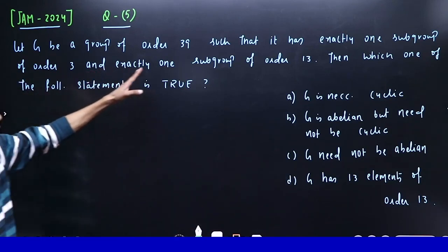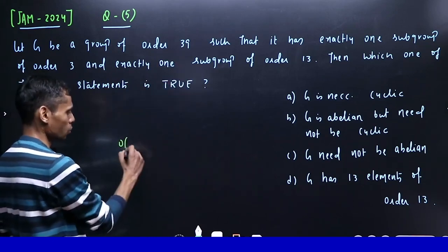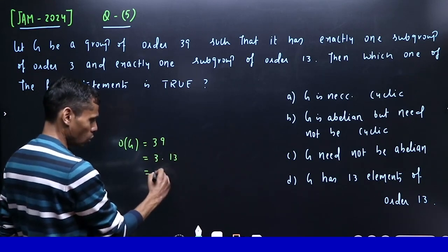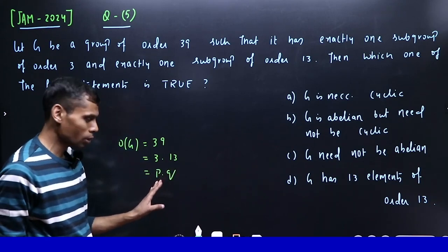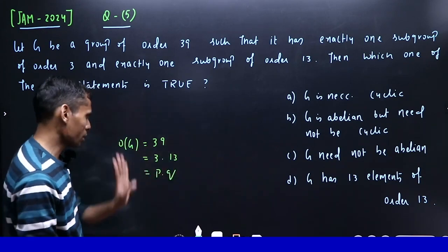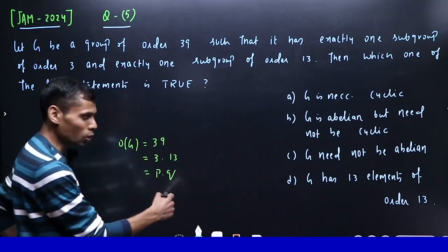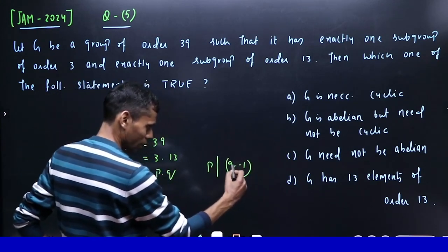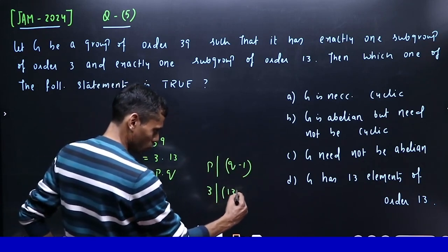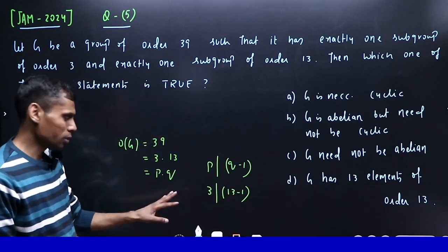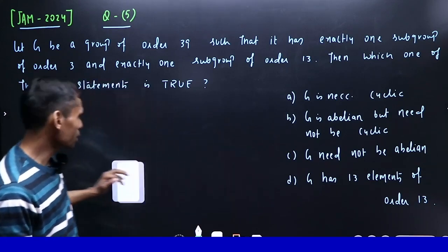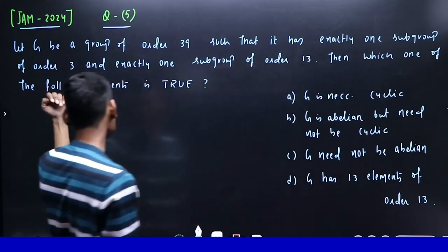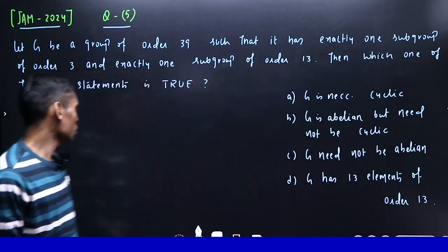Let G be a group of order 39 so that it has exactly one subgroup of order 3 and exactly one subgroup of order 13. Then which one of the following statements is true?